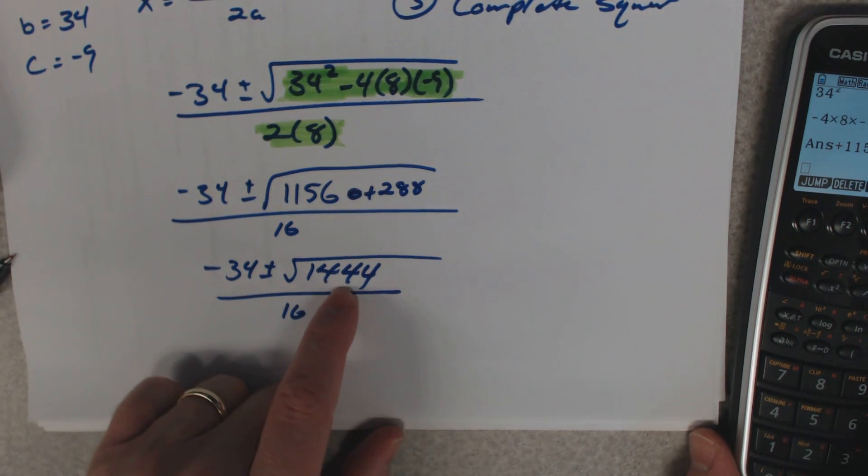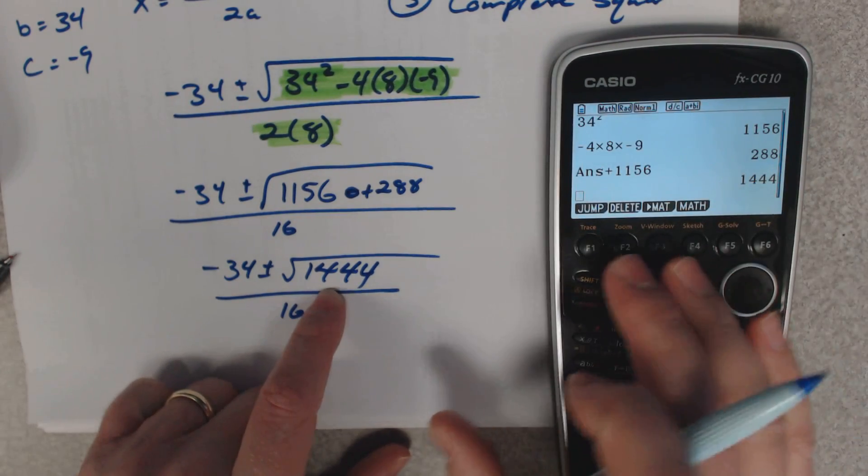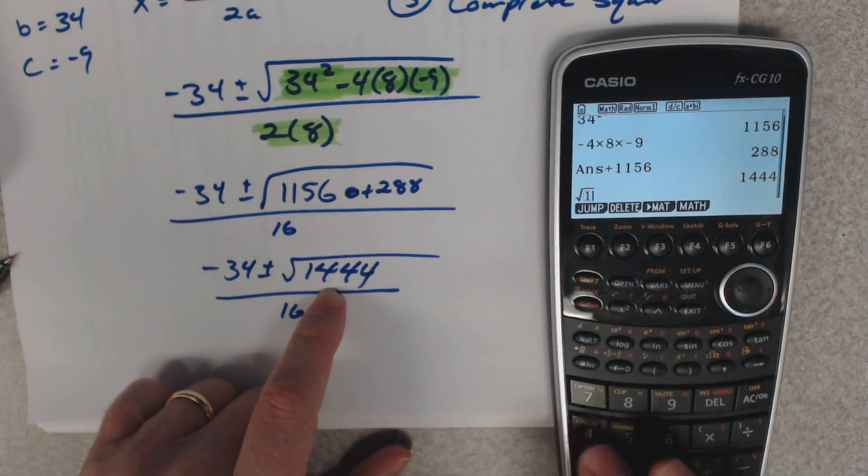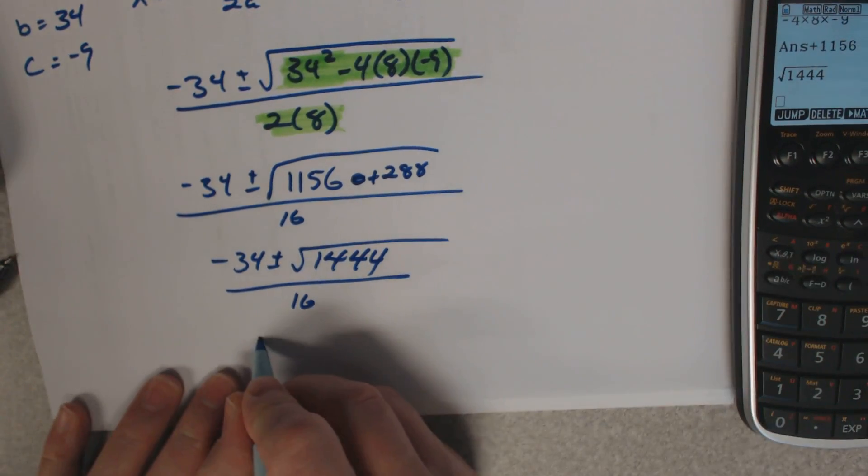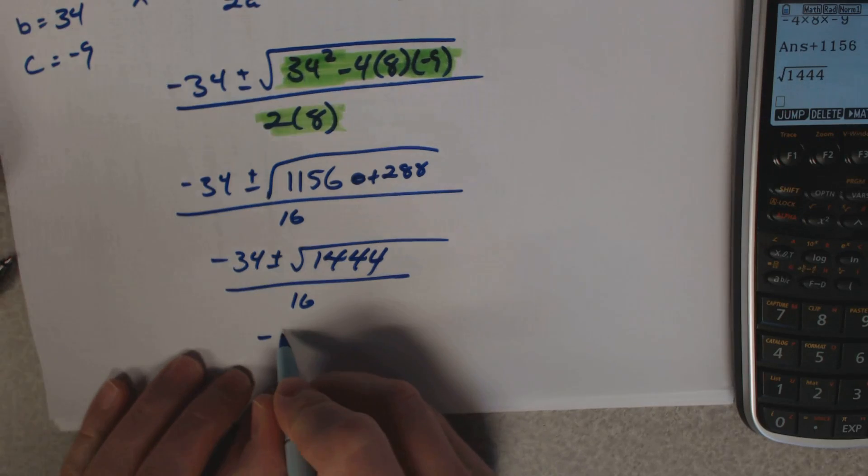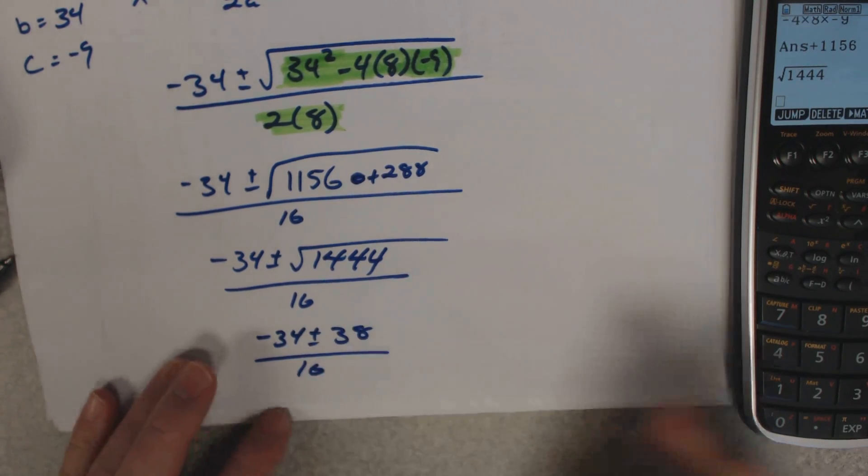All right, now what is this? Hopefully I can put this square root of 1444 in, and it gives me a whole number answer, hopefully. So, square root of 1444, 38, sweet.